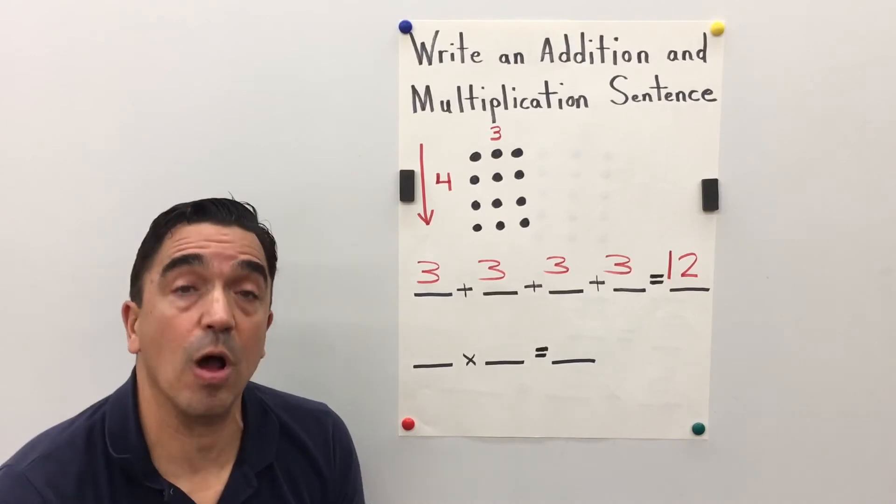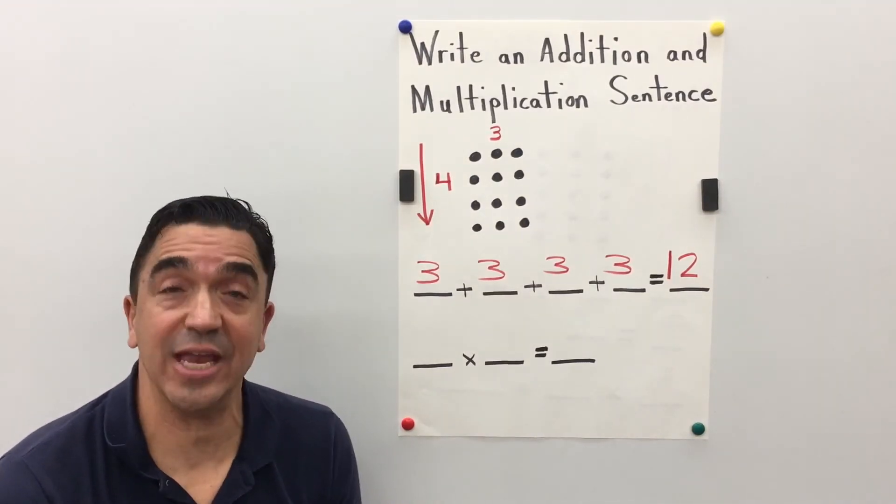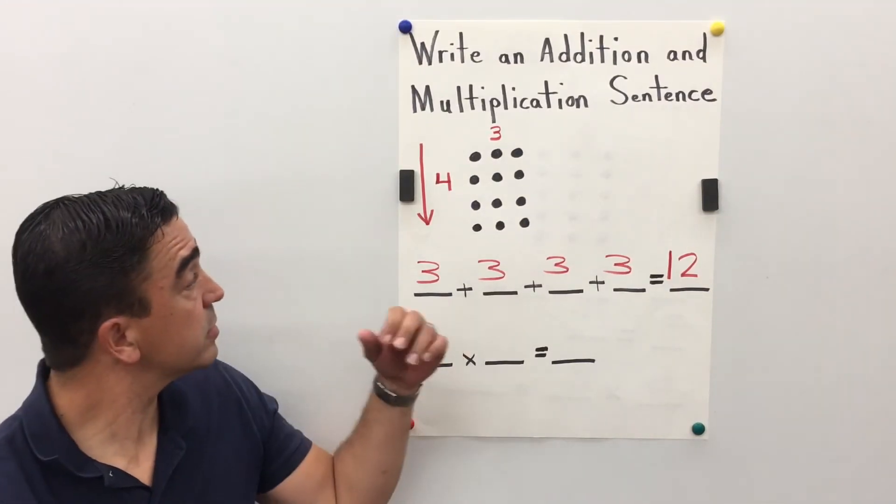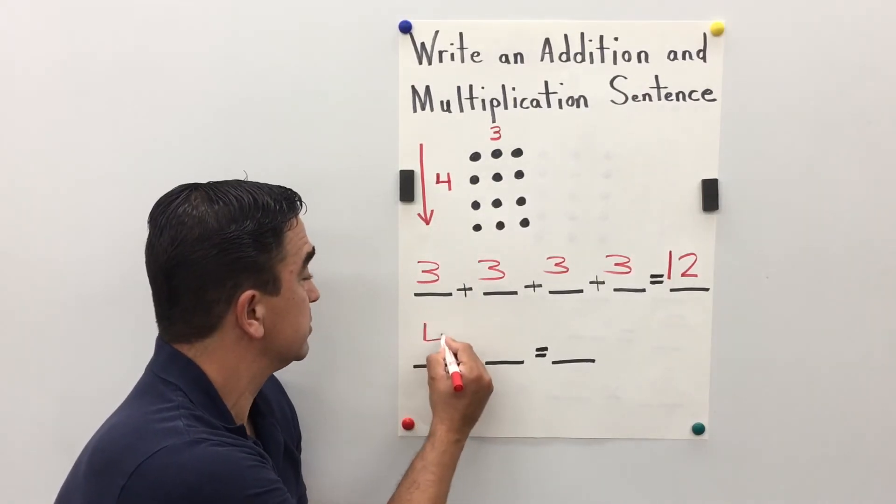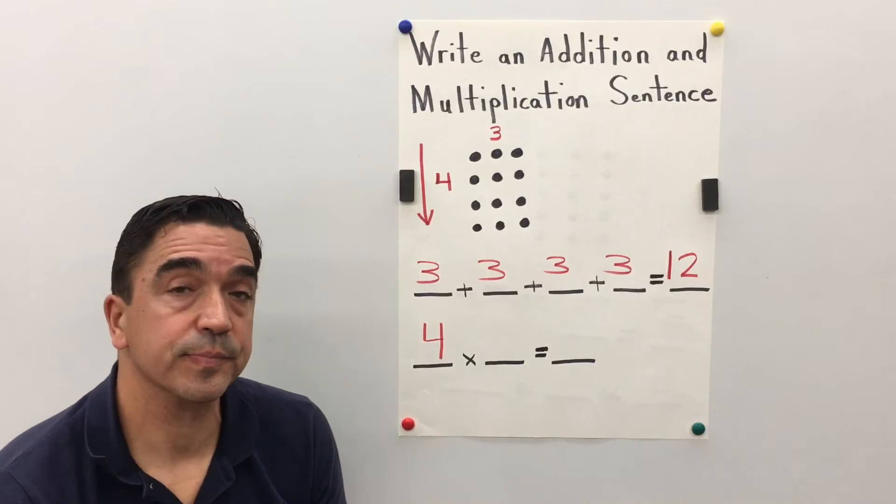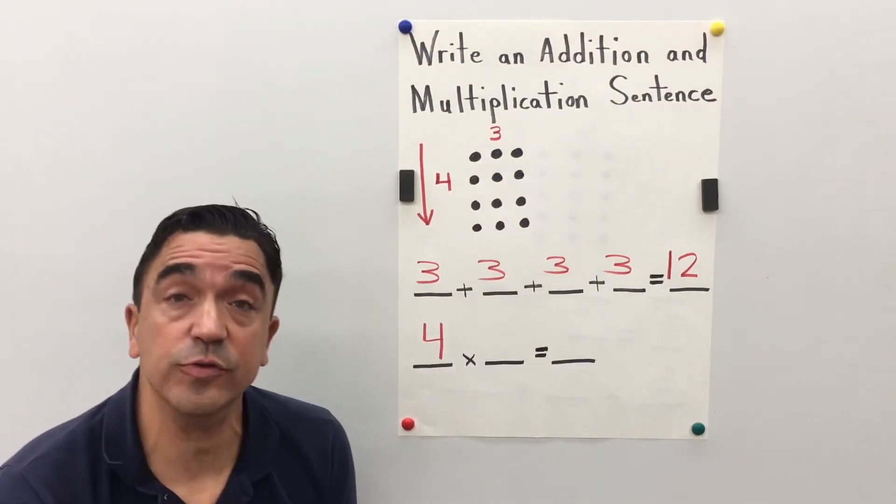Now we're on to our multiplication sentence. Four rows. Three counters in each row.